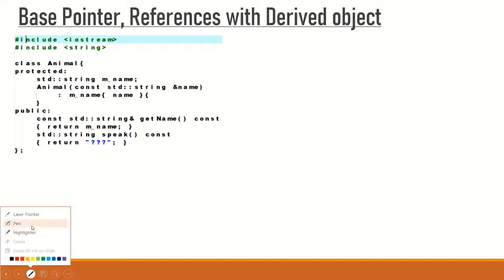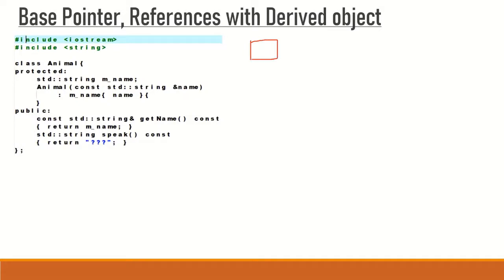We are going to have one base class here — the Animal class will be the base. We're going to inherit two classes from this Animal class: the first derived class will be Cat and the second derived class will be Dog. This kind of inheritance is called hierarchical inheritance, which was discussed during the inheritance topic.